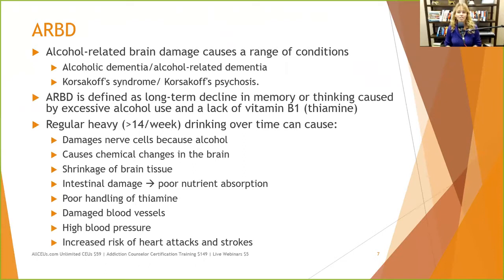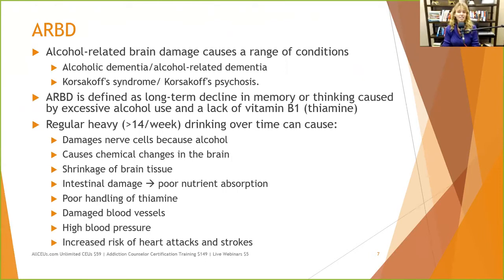Alcohol-related brain damage causes a range of conditions including alcohol-related dementia and Wernicke-Korsakoff syndrome. ARBD is defined as long-term decline in memory or thinking caused by excessive alcohol use and lack of vitamin B1. Alcohol affects how your body processes vitamin B1, and excessive use damages the intestinal lining so the body can't absorb nutrients as well, causing B1 to decline. Regular heavy drinking — more than 14 drinks a week — damages nerve cells.